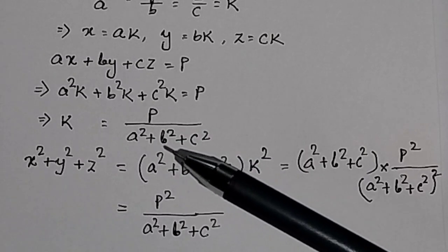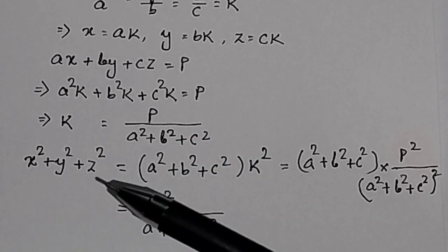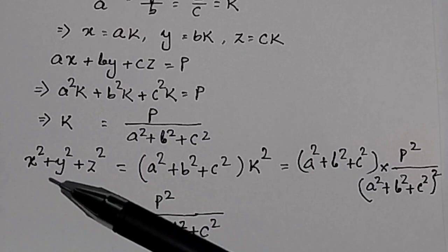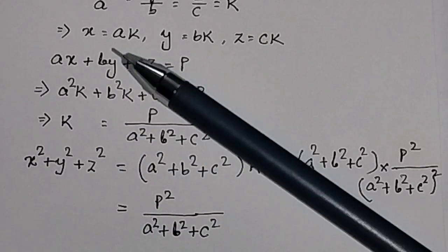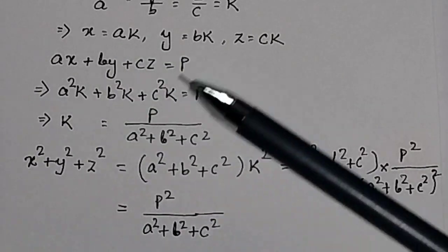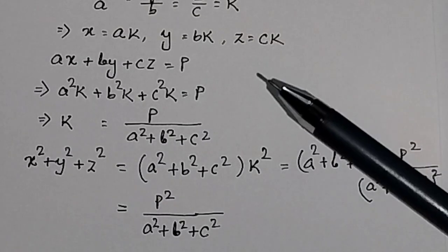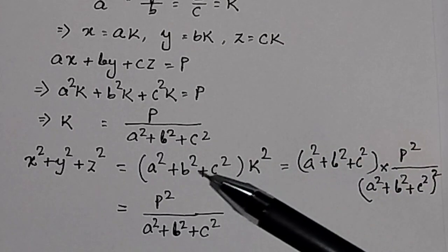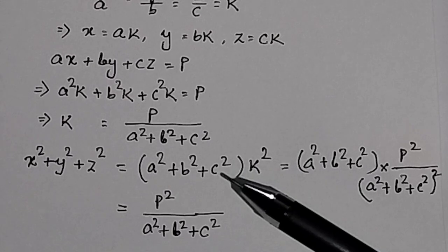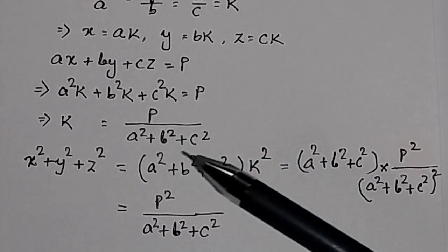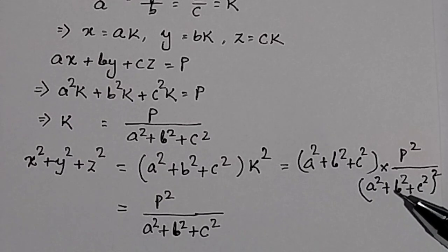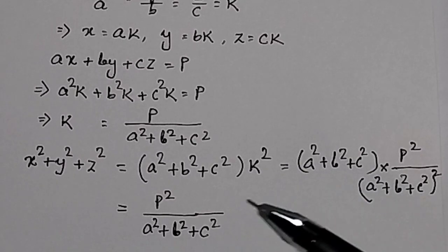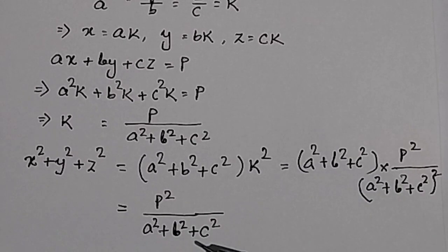So k = p / (a² + b² + c²). Now the objective function x² + y² + z² equals a²k² + b²k² + c²k². Taking k² common, we get k²(a² + b² + c²). Since k² = p² / (a² + b² + c²)², after simplification this becomes p² / (a² + b² + c²).